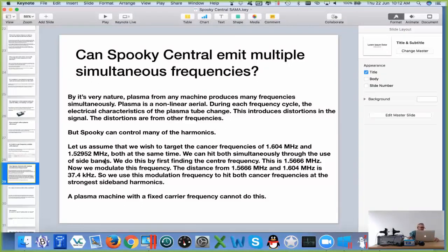Firstly, the plasma tube itself introduces harmonic frequencies by the nature of the gas, the electrodes, the placements. The physical tube itself distorts the waveform, which introduces harmonics.